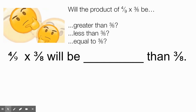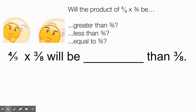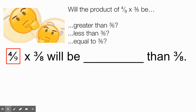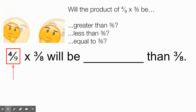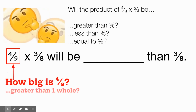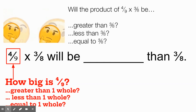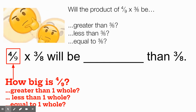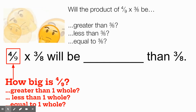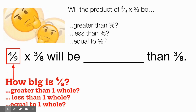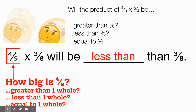The key number in this problem — the number only shown to us one time — is four-ninths. The question is: how big is four-ninths? Is it greater than a whole, less than a whole, or equal to a whole? Four-ninths is less than one whole. So when we multiply three-eighths by a number that's less than a whole, we're going to get a number that's even smaller than three-eighths — it will be less than three-eighths.